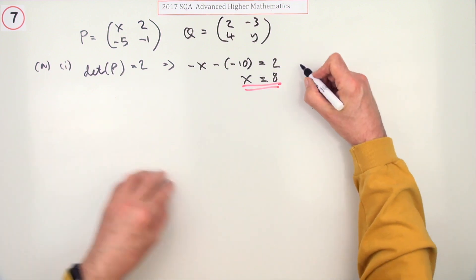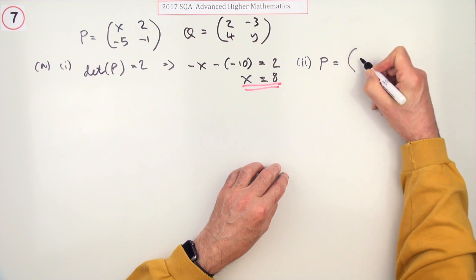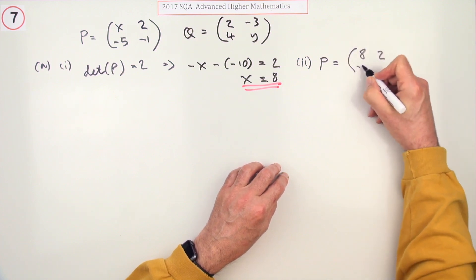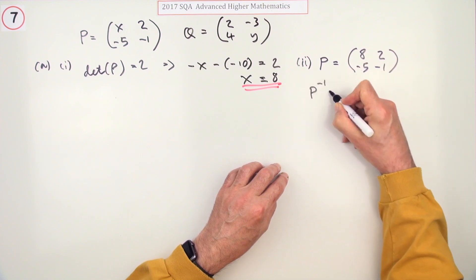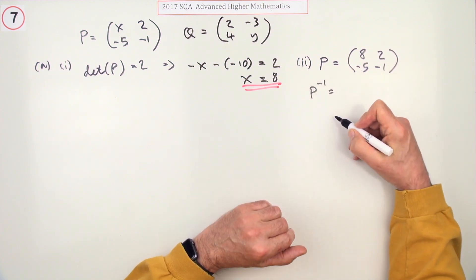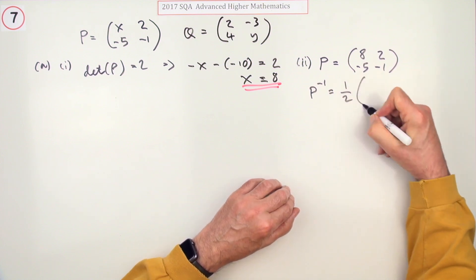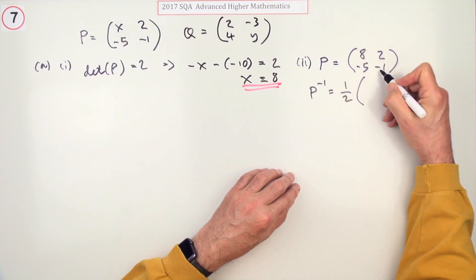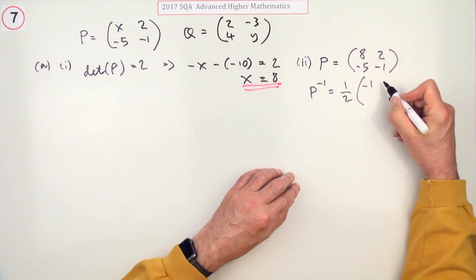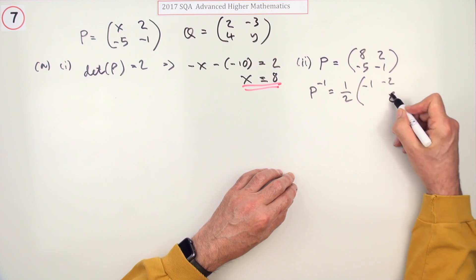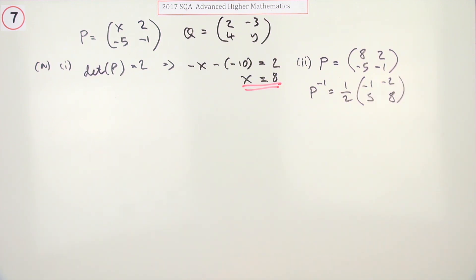For the second part, if P equals (8, 2; -5, -1), what's its inverse? You need to know its determinant, but you do - it's 2. It's one over the determinant times switching the main diagonal, so that's (-1, 8), and reversing the signs of the other diagonal: (-2, 5).